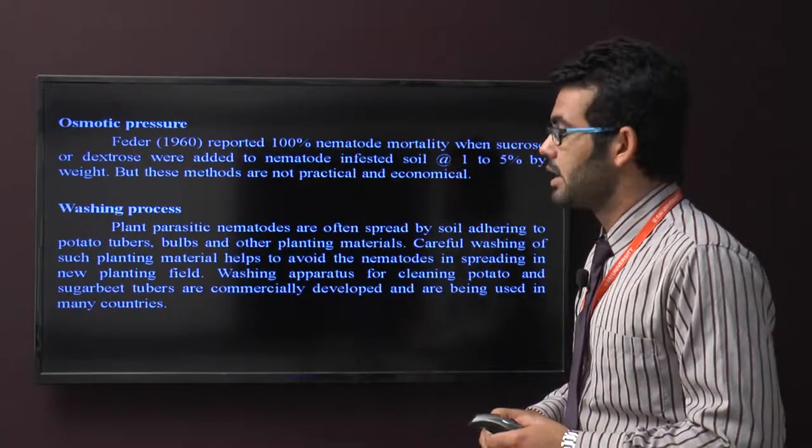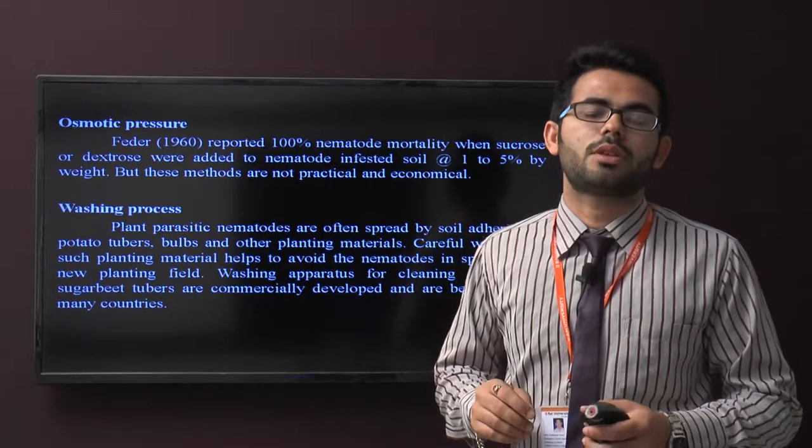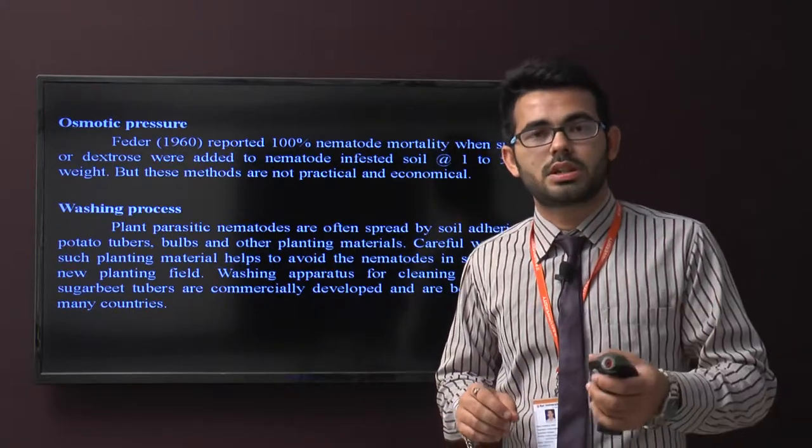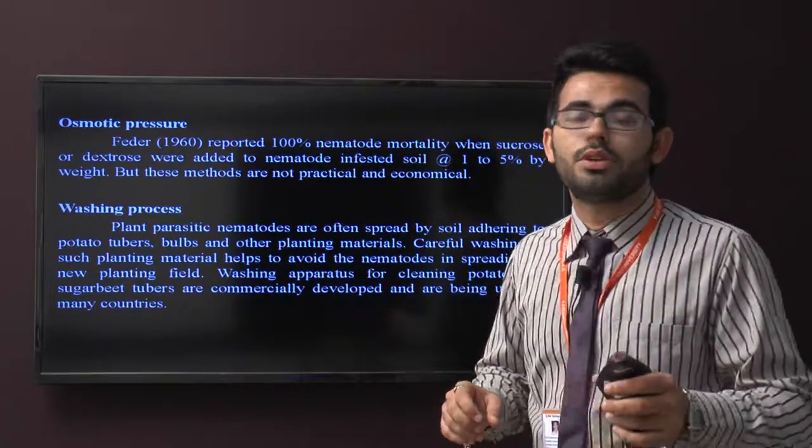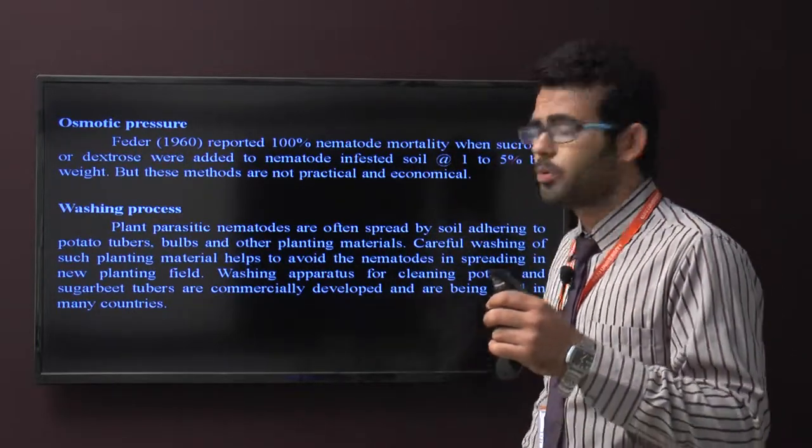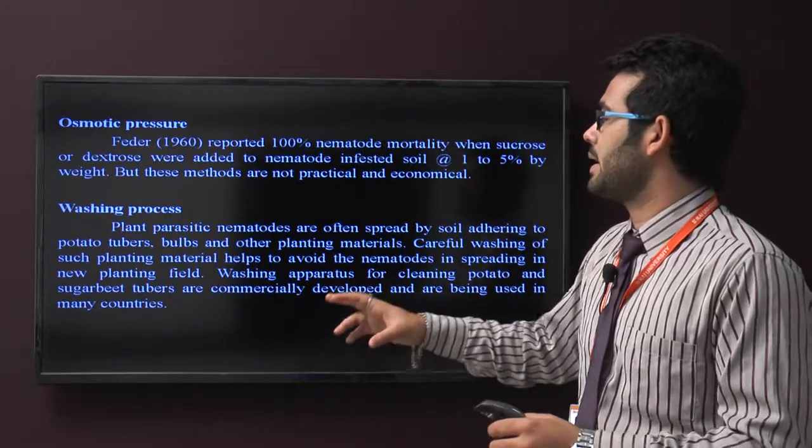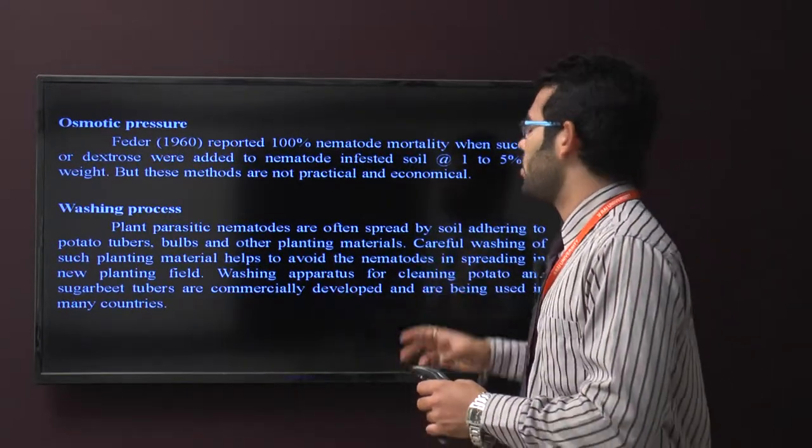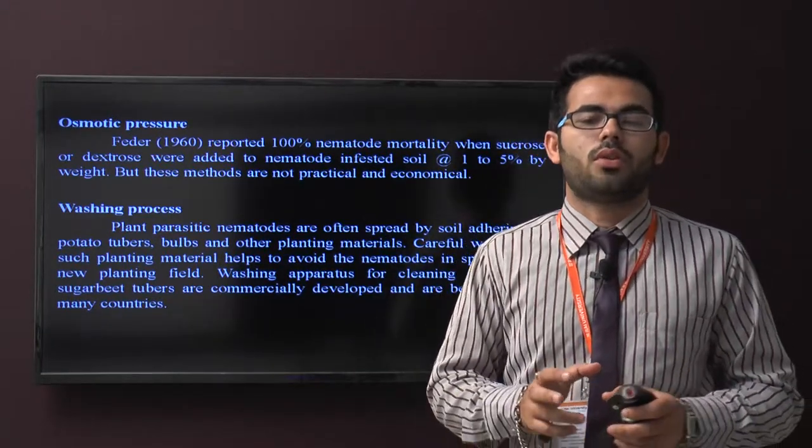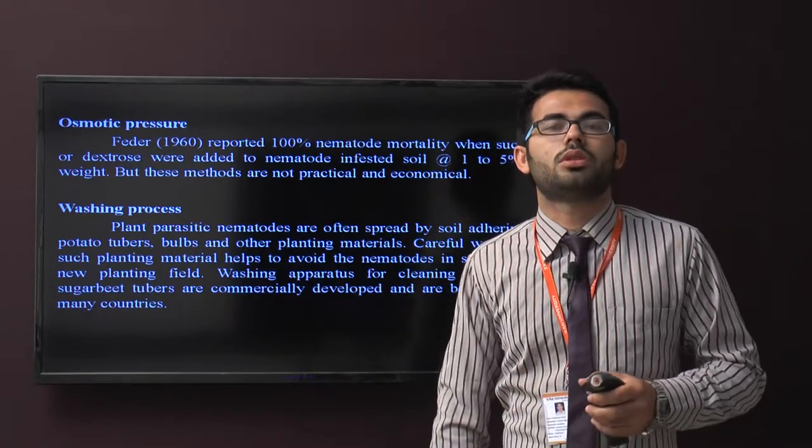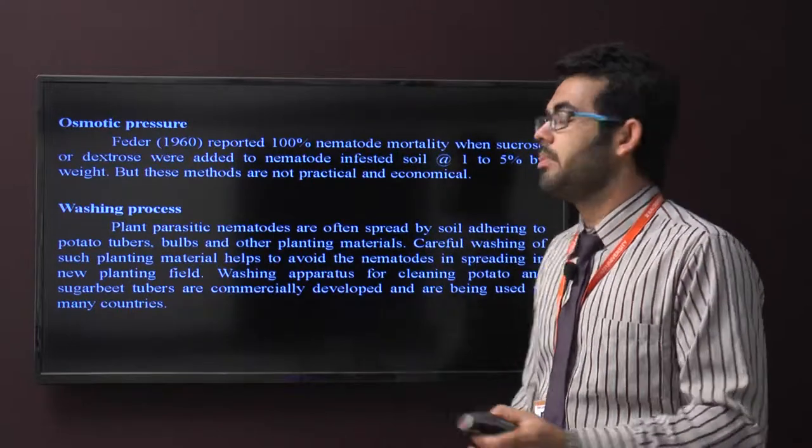Now the washing process. Generally for propagation we use tuber crops, tubers, bulbs, and other planting material. First, we properly wash their planting material. Carefully washing such planting material helps to avoid nematode spreading to new planting fields. Washing apparatus for cleaning potato and sugar beet tubers were commercially developed and are being used in many countries.